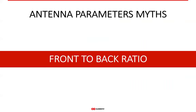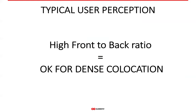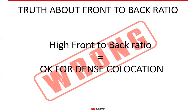To be fair, let's also look at the established parameters you might already know. Front-to-back ratio is one of them, and many manufacturers include it in their antenna data sheets or build marketing messages around it. The conventional thinking is that if front-to-back ratio is high, it means an antenna is good for dense collocations — so if antennas are back-to-back and both have high front-to-back ratio, they will not interfere with each other. The reality is that front-to-back ratio does not mean an antenna is good for dense collocation in every possible setting.